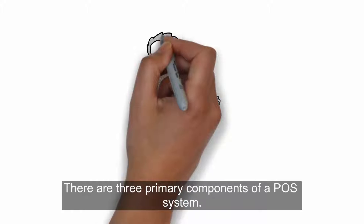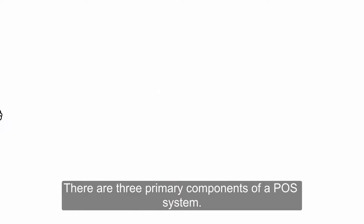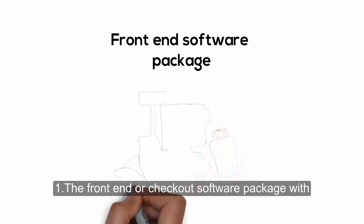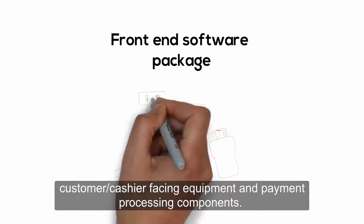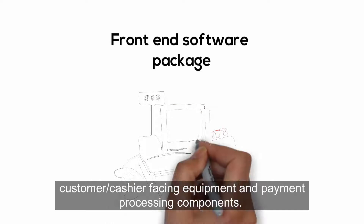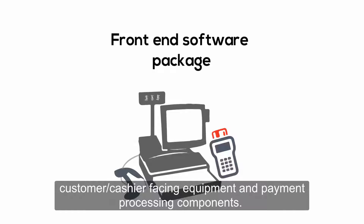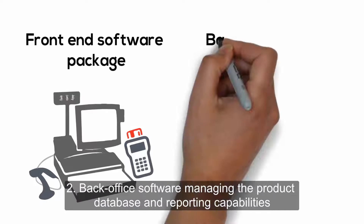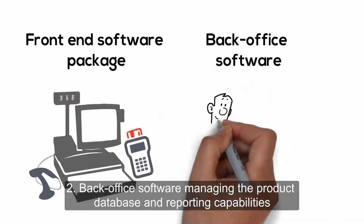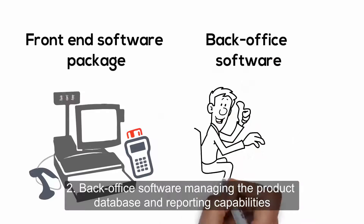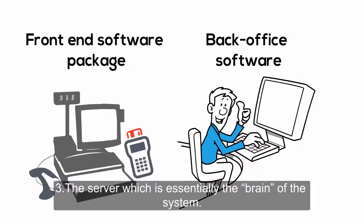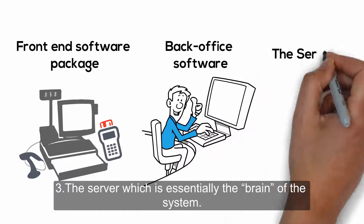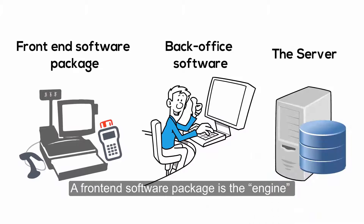There are three primary components of a POS system. One: the front-end or checkout software package with customer and cashier-facing equipment and payment processing components. Two: back-office software managing the product database and reporting capabilities. Three: the server, which is essentially the brain of the system.